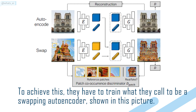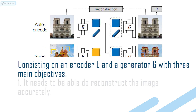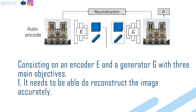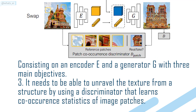To achieve this, they train what they call a swapping autoencoder, consisting of an encoder E and a generator G with three main objectives. First, it needs to be able to reconstruct the image accurately. Then, it needs to learn independent components that could mix together to create a new hybrid image. Finally, it needs to be able to unravel the texture from structure by using a discriminator that learns co-occurrence statistics of image patches.